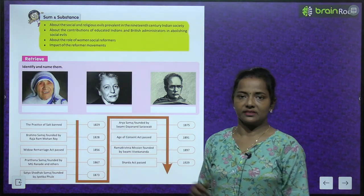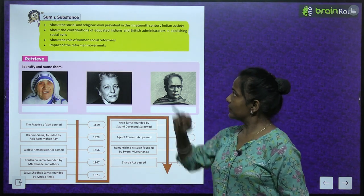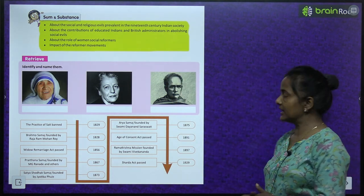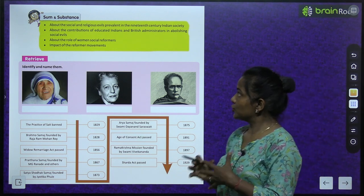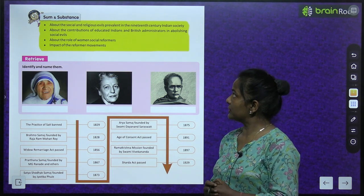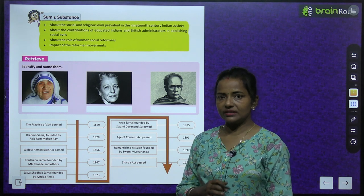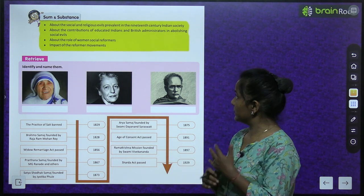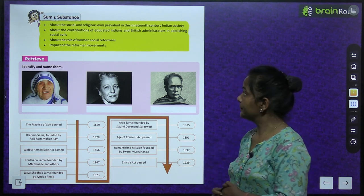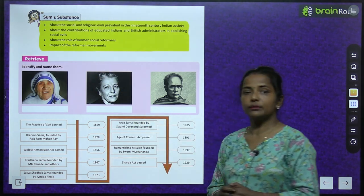The topics we are going to cover in this chapter are: about the social and religious evils prevalent in 19th century Indian society, the contributions of educated Indians and British administrators in abolishing social evils, and the role of women social reformers and impact of the reform movements.